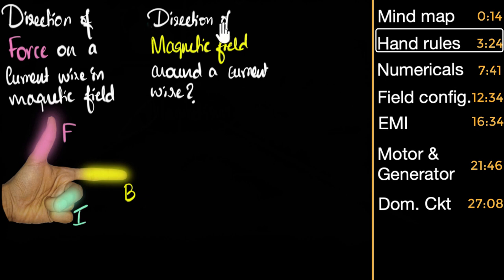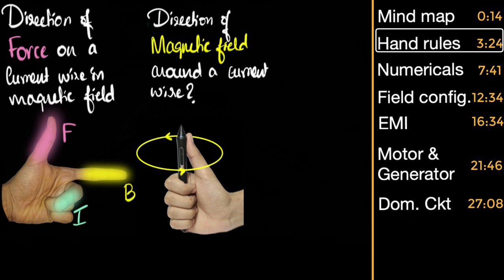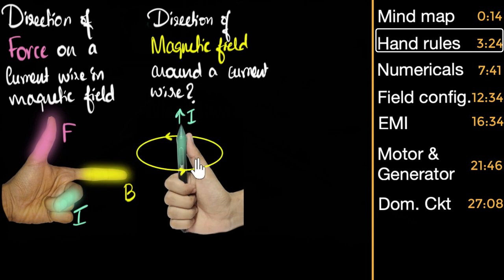How do you figure out the direction of the magnetic field around a current carrying wire? The answer is your right hand thumb rule. You clasp the conductor such that the thumb represents the direction of the electric current, and then your encircling fingers will give you the direction of the magnetic field around that conductor.